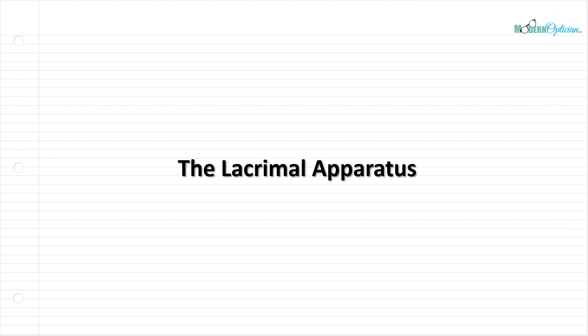Next step in our journey through ocular anatomy - we're now going to talk about the lacrimal apparatus. We've talked about the parts of the eye, the internal structures and some of the external structures. Now we're going to start looking at some of the accessory structures that are equally important. The lacrimal apparatus is a group of structures responsible for tear production and tear drainage. We're also going to talk in a future lecture about the tear layer itself and how important it is to vision.